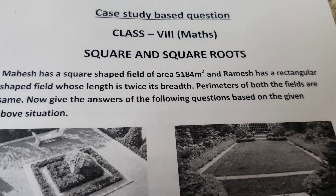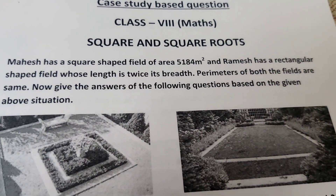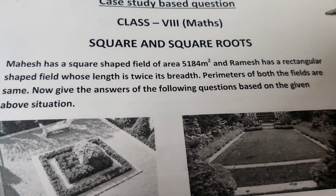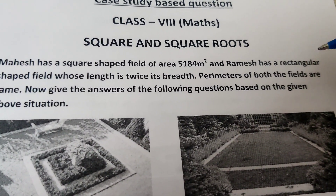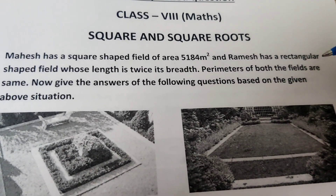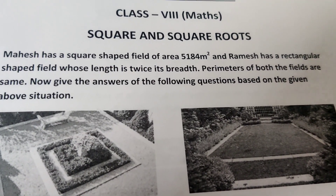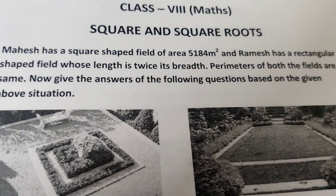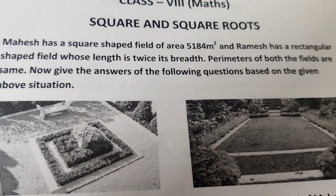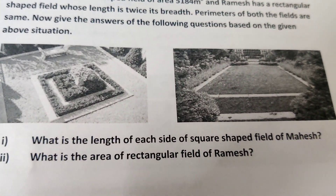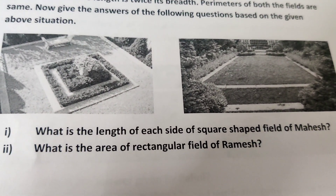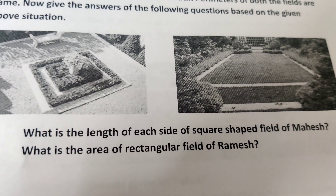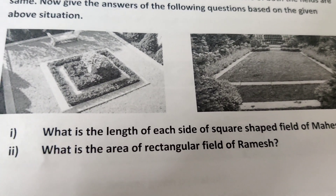Case study based question for Class 8, chapter: Squares and Square Roots. Maize has a square shaped field of area 5184 square meters. Rames has a rectangular shaped field whose length is twice its breadth. The perimeters of both fields are the same. The first question is: what is the length of each side of the square shaped maize field?